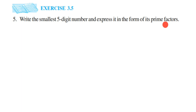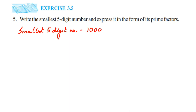So what is the smallest five-digit number? The smallest five-digit number is 10,000. So we're going to express 10,000 in terms of prime factors. There are many ways of writing a given number in terms of prime factors — you can use a factor tree method or you can use a prime factorization method.